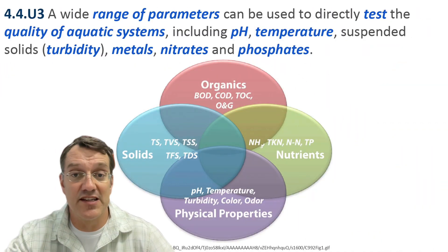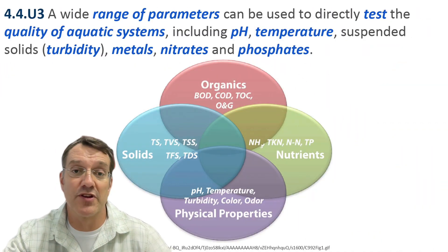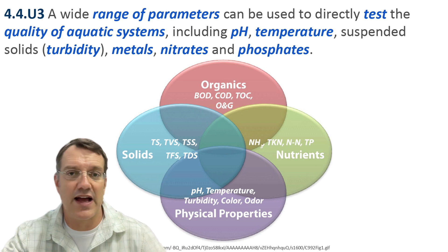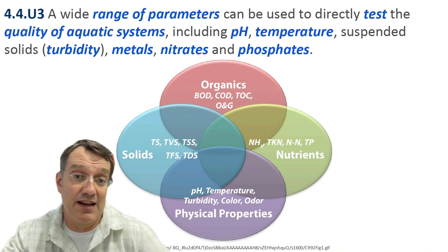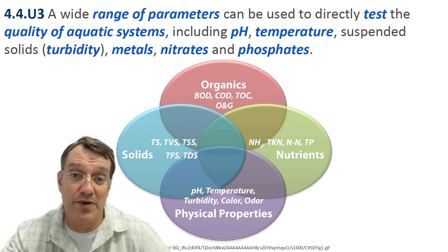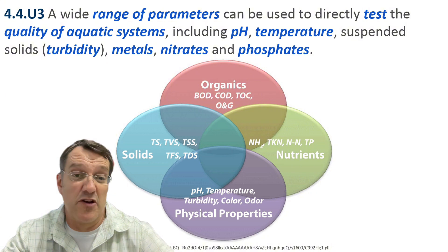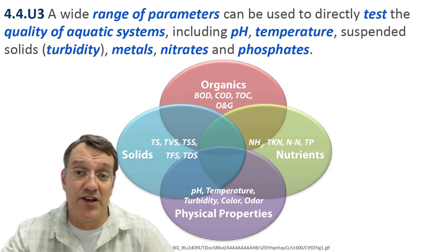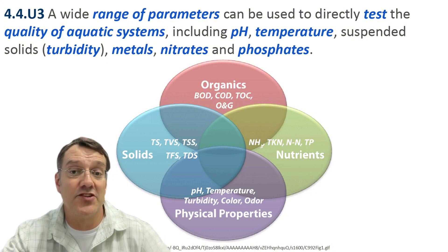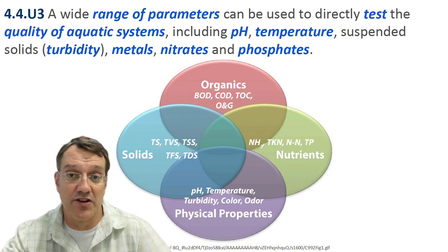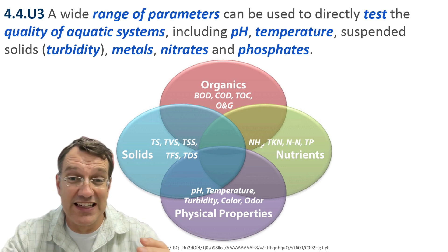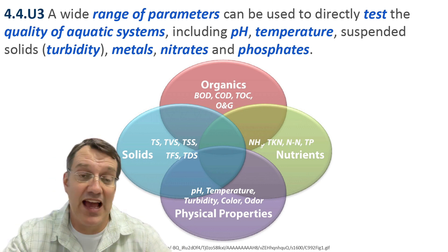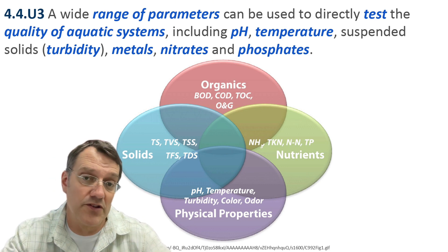To assess water quality scientifically, we use multiple parameters and measurements. These fall into several categories: physical properties like pH, temperature, and turbidity; measurements of solids and organic matter; and analysis of nutrient levels in the water. Each of these parameters tells us something different about the health of that water system.